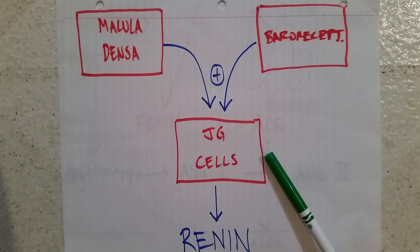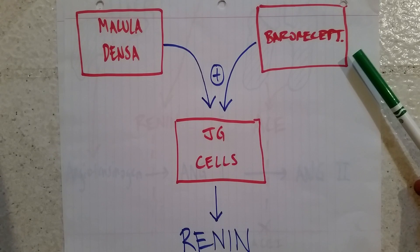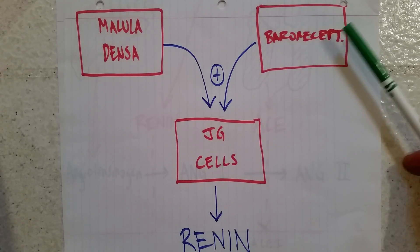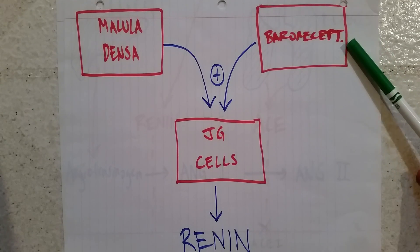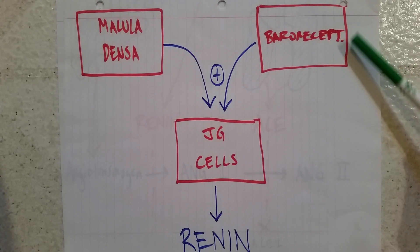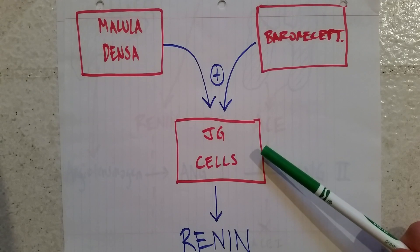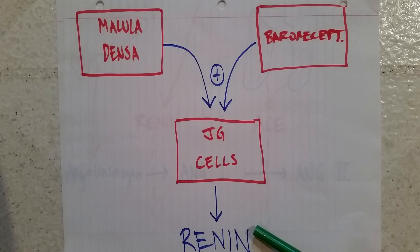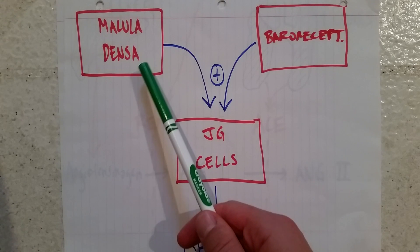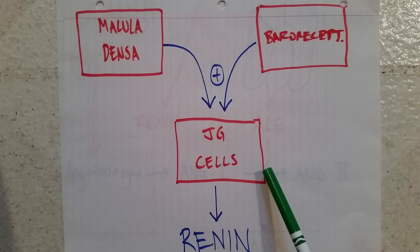The other mechanism by which JG cells get activated is a simple baroreceptor mechanism. Baroreceptors are pressure receptors that sense current blood pressure and are located throughout the body. The ones inside the kidney can sense blood pressure within the kidney, and if it's not high enough, they will also activate the JG cells. The JG cells, which make renin, are located in the afferent arteriole of the nephron, while macula densa cells are in the distal convoluted tubule.